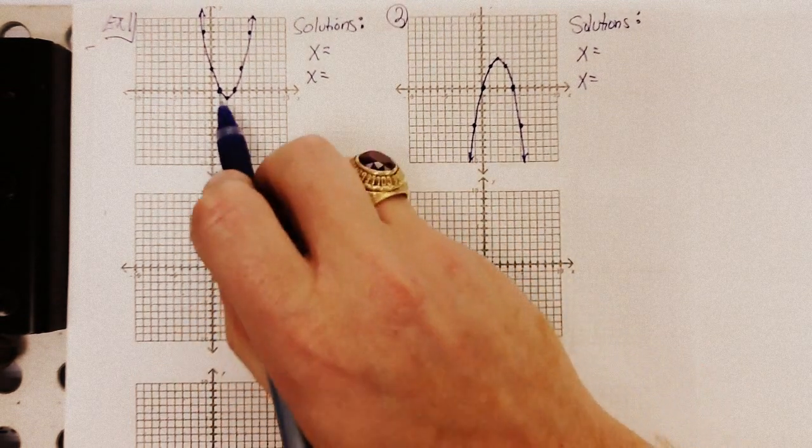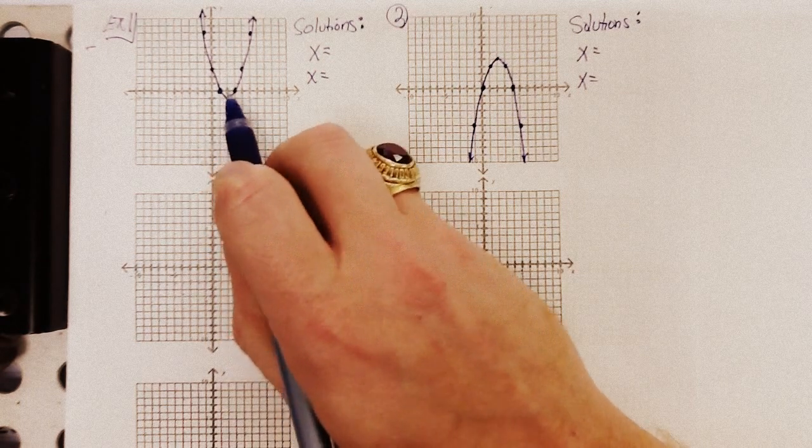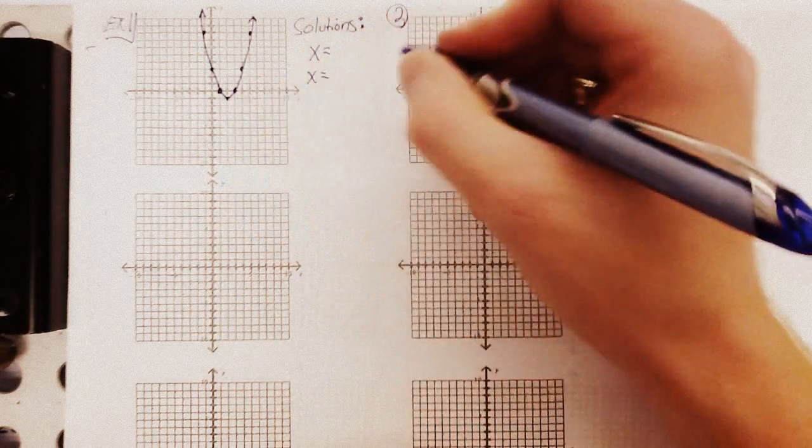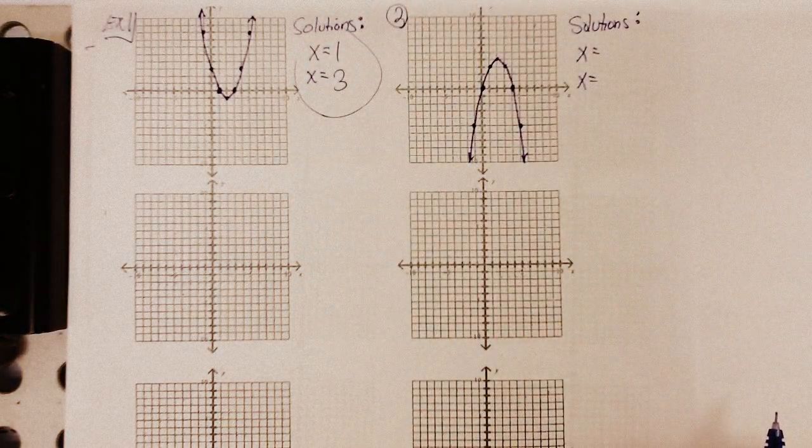So in this case, just to get the idea, well, where does this parabola cross the x-axis? Well, it crosses at one, crosses at three, and that's it. That's the answer. That's as simple as that.